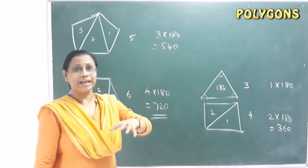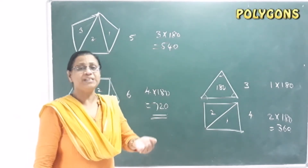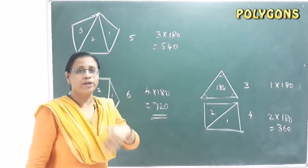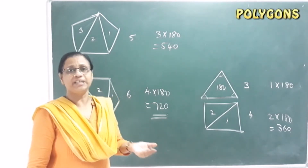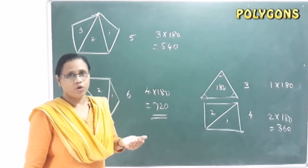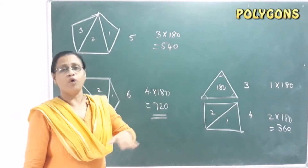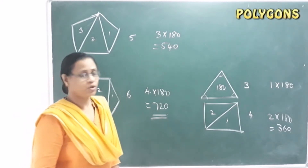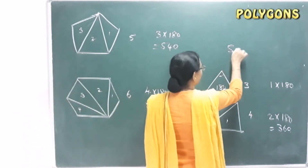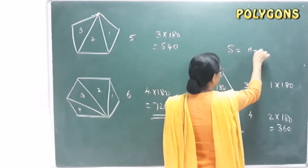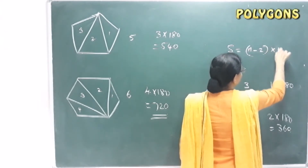That means we are measuring the inner corner — the interior angle sum. The sum increases by 180 degrees each time we add one triangle. This gives us a formula: S = (N − 2) × 180 degrees.